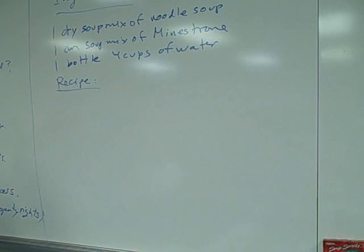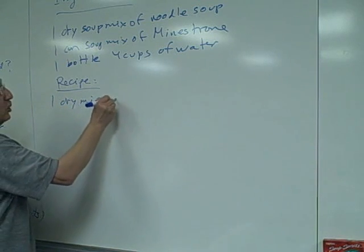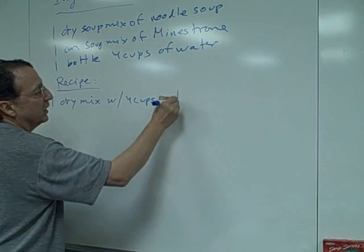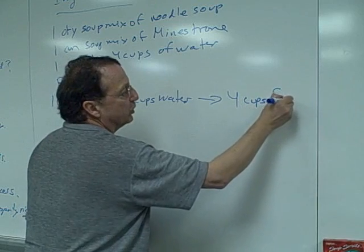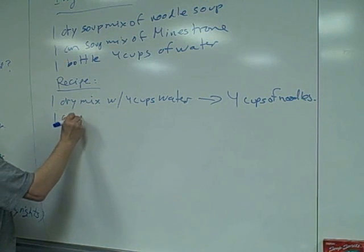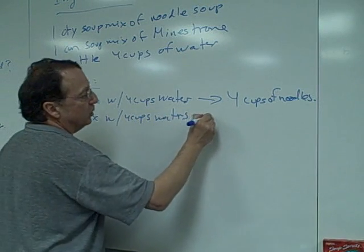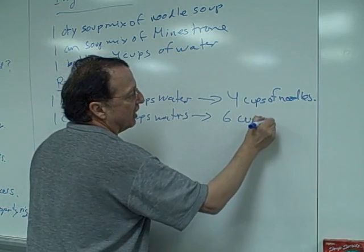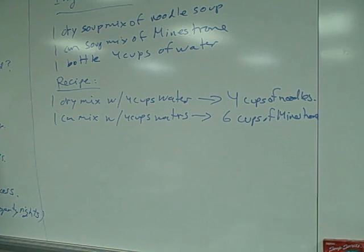The recipe is one dry mix with four cups of water yields four cups of noodle soup. And then one can mix with four cups of water gives you six cups of minestrone. In general, we wouldn't call them ingredients, we would call them resources. And we wouldn't call it recipe, we would call it production process or technology.